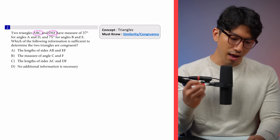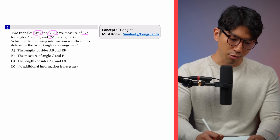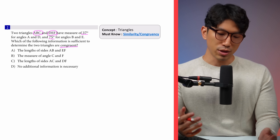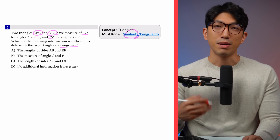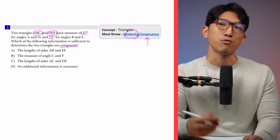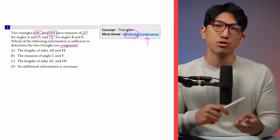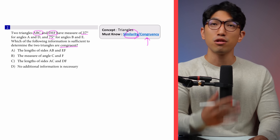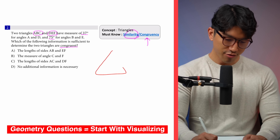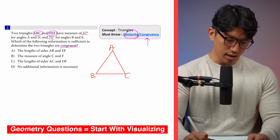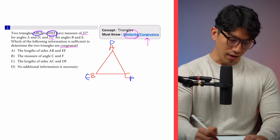The next question says triangle ABC and DEF have angle measures of 37 and 75 degrees. Which of the following is sufficient to determine the two triangles are congruent? On the old SATs, they mainly tested similarity between two triangles. But nowadays, they're testing more on congruency. The very first thing we're going to do for all geometry questions is visualize and draw it out. We have triangle ABC and triangle DEF arranged the same way.